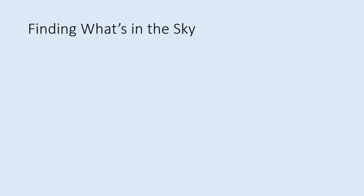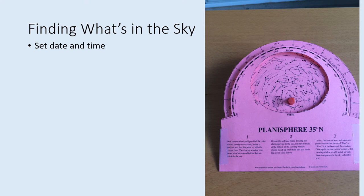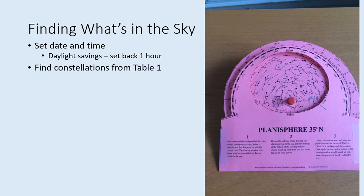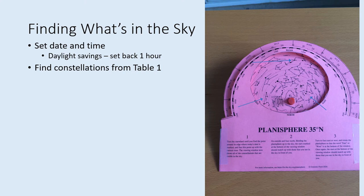Before you go out observing, you'll need to decide what you're going to look for. Whether you're using an app or a planisphere, set the date and time to when you'll be observing. Remember that if daylight savings time is in effect, from April through October, you'll need to set the time on the planisphere back by an hour. Usually, apps will make this correction for you. Look at the view of the sky and find as many of the constellations from Table 1 in the lab as you can.